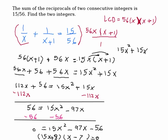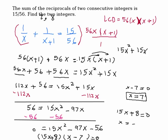So we get two solutions. One solution is x minus 7 equals 0, so x equals 7. That means the first consecutive integer is 7, and the next one is 8. So the answer is 7 and 8. The other solution gives x equals negative 8 over 15, which is not a valid integer solution, so we don't need that.